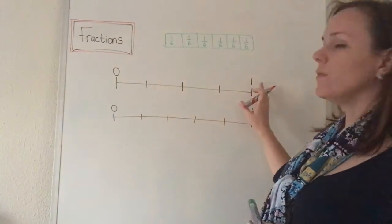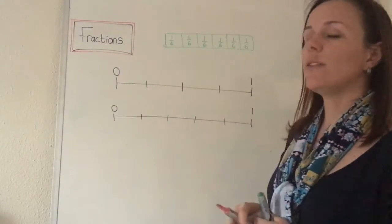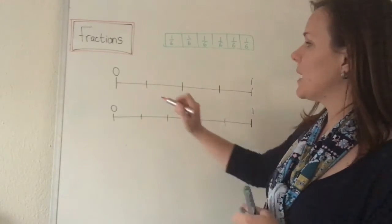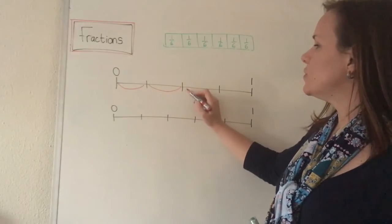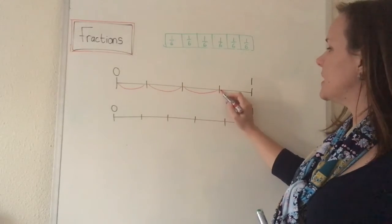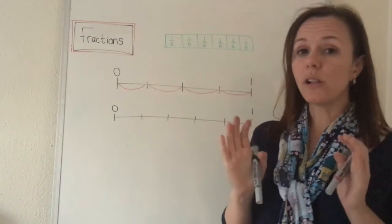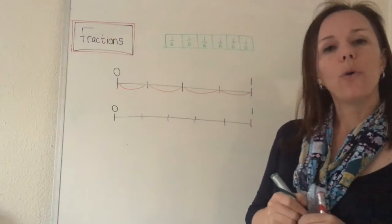Now I've divided this one whole into different parts, and remember on a number line, we don't count the lines, we count the spaces in between. So here we have one space, two spaces, three spaces, four spaces. So if I divide one whole into four parts, that means I have quarters.